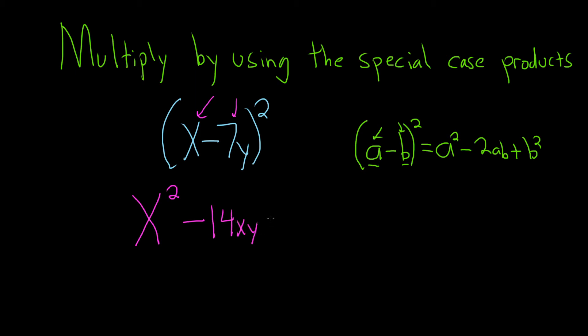And then you square the last one, and it's always a plus. So plus 7y squared. Let me go over that one more time. So you square the first one, so it's x squared.